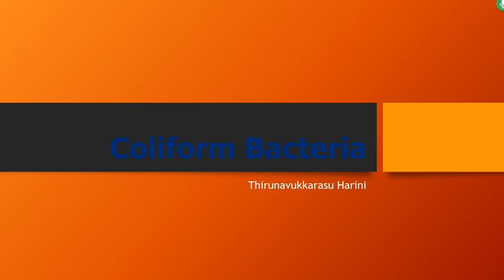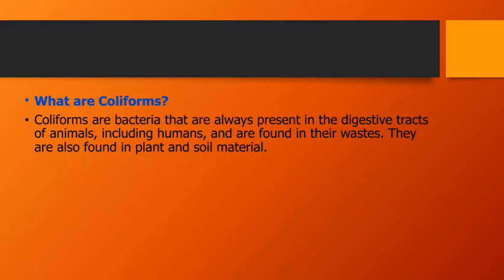Today our topic is Coliform Bacteria. Coliforms are bacteria that are always present in the digestive tract of animals, including humans, and are found in their waste. They are also found in plant and soil material.